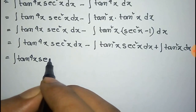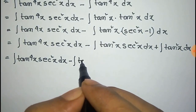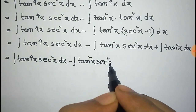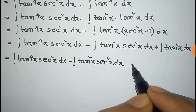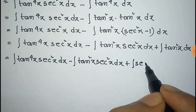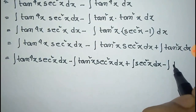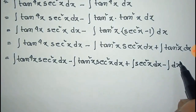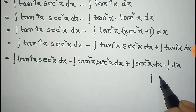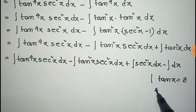Now we can write this tan²x into tan²x. We can write tan²x as sec²x minus 1 into dx, that's integration of dx.